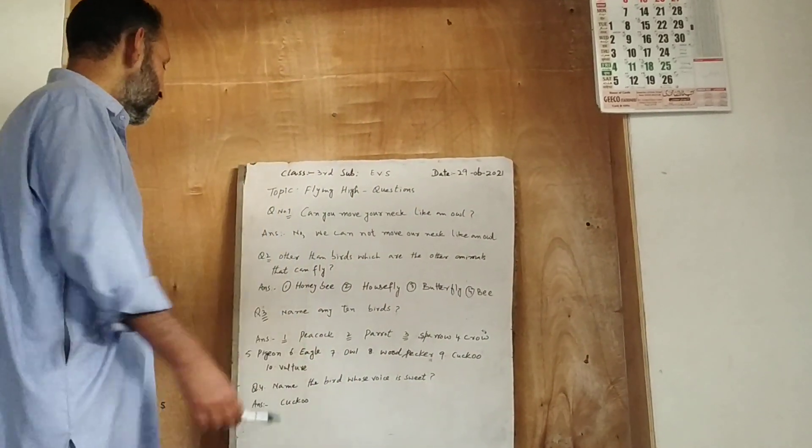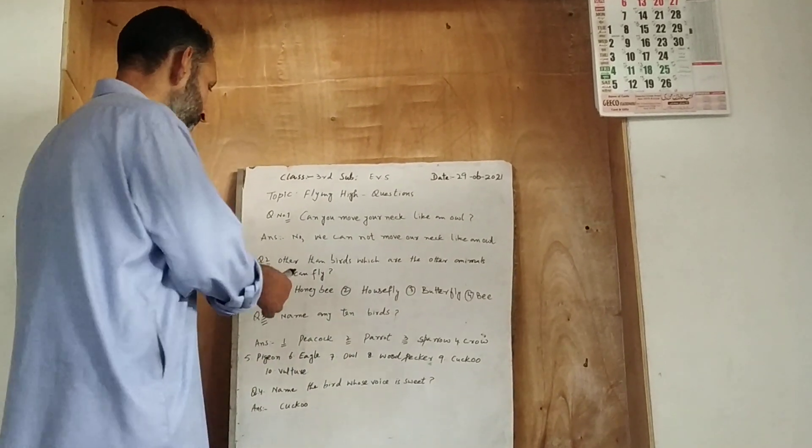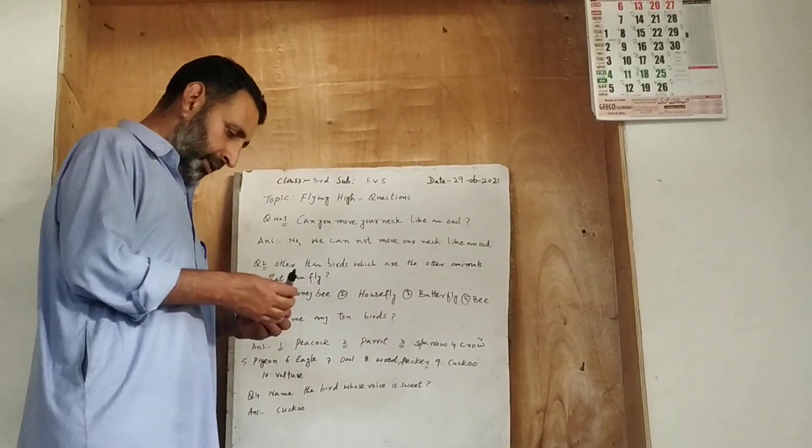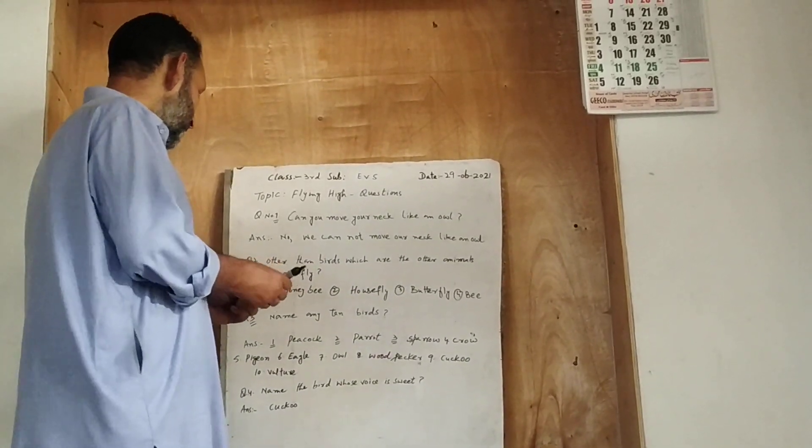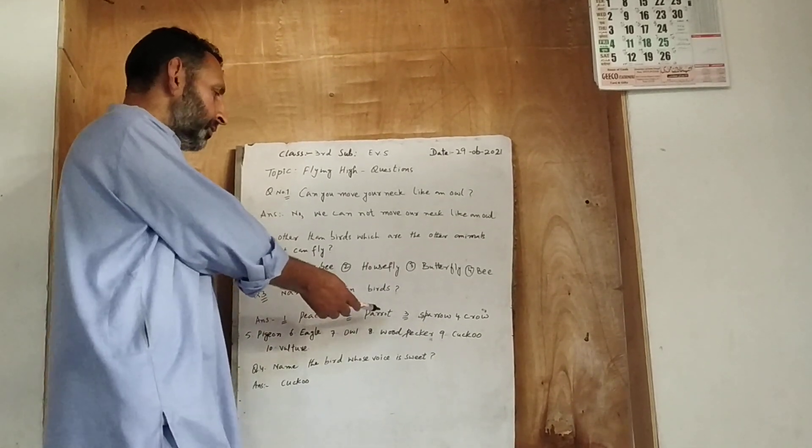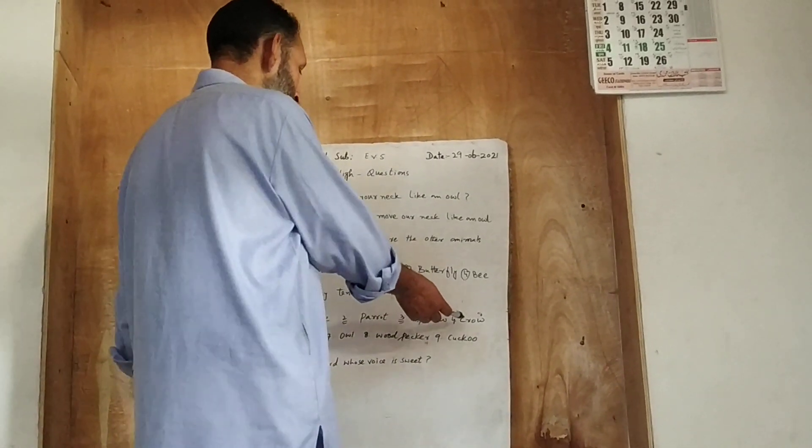Question number third. Name ten birds. Aap ko das parindu ki naam dikhne hai. Number one, peacock. Number two, parrot. Number three, sparrow. Number four, crow. Number five, pigeon.